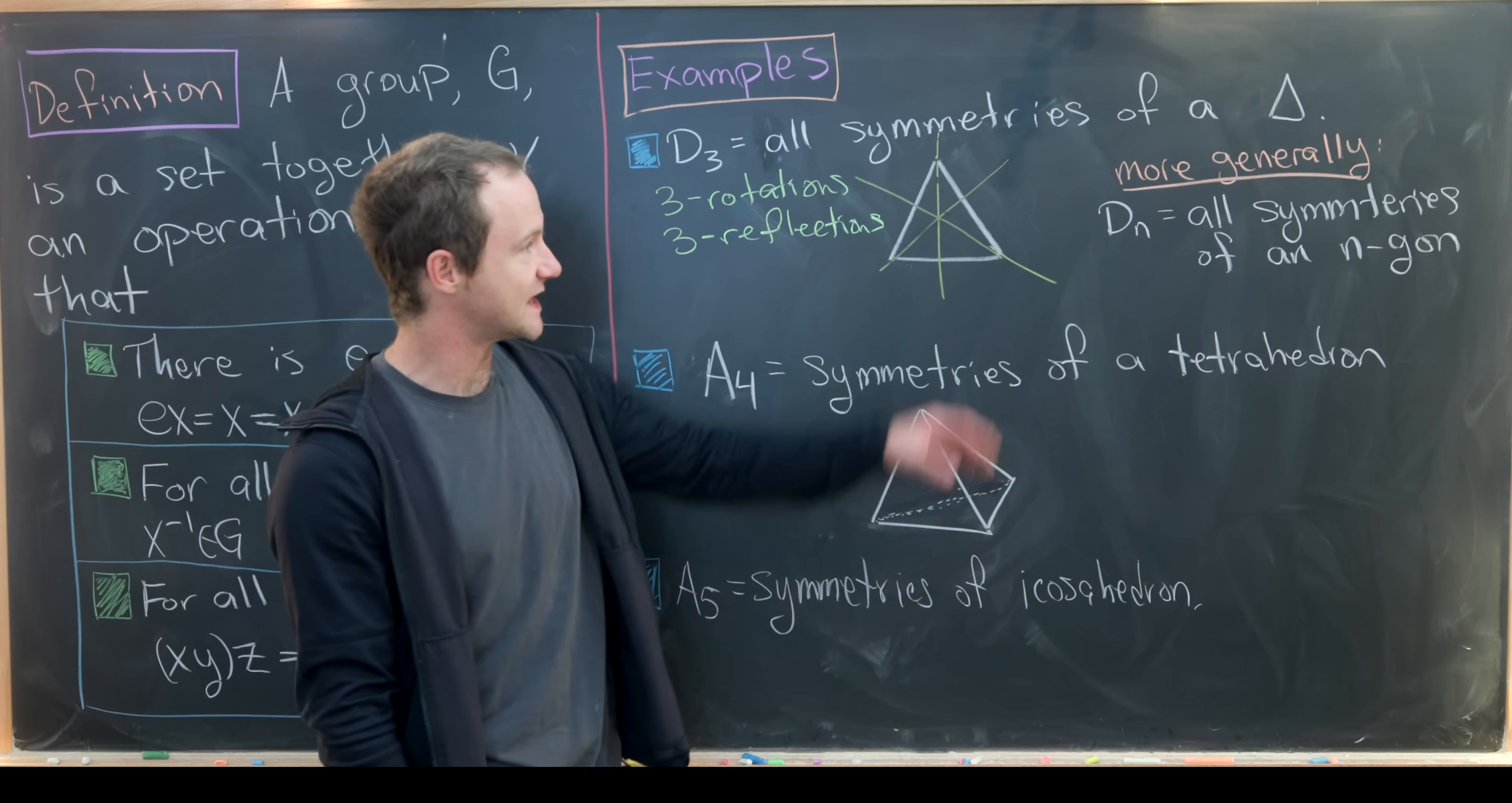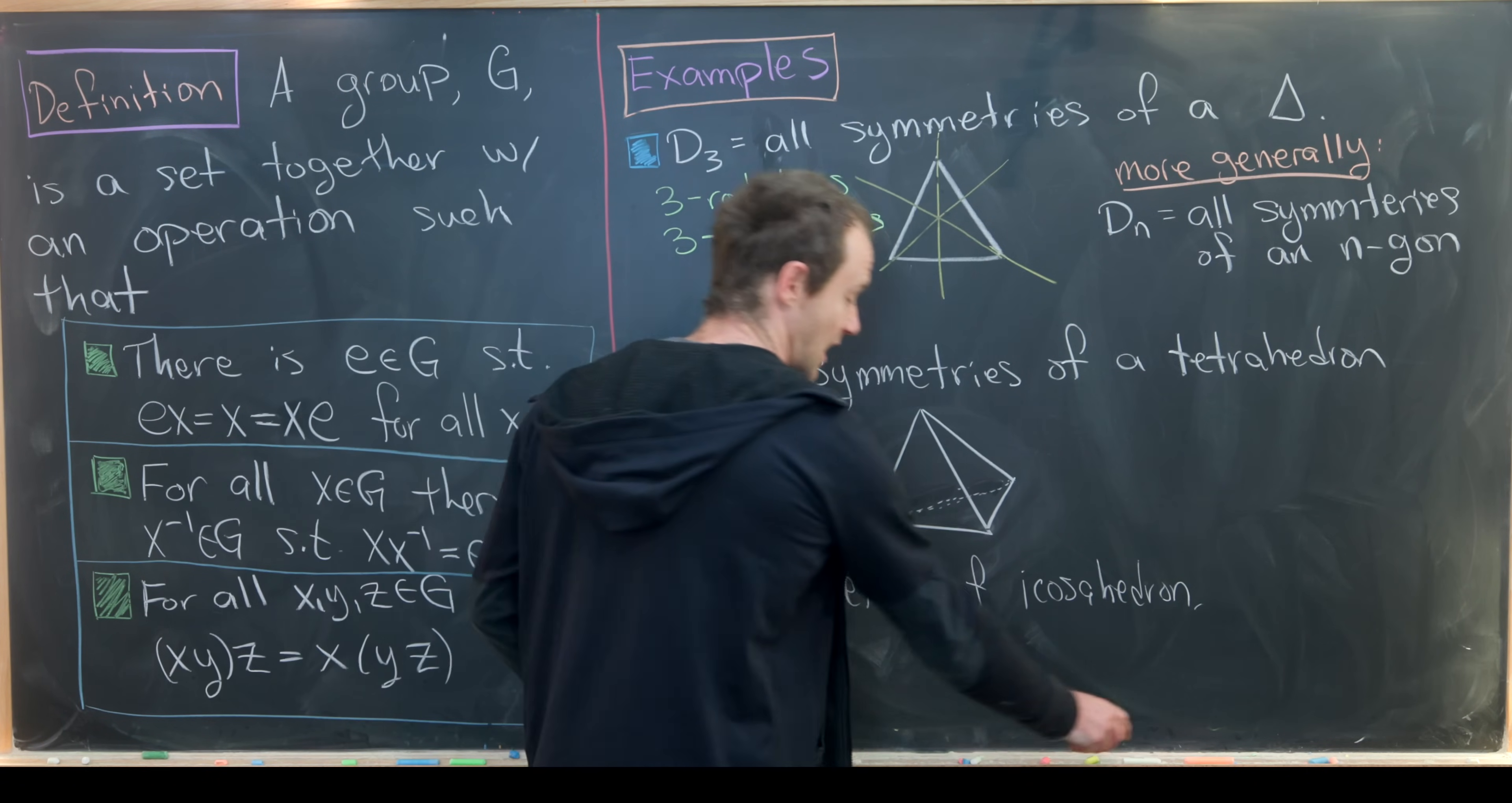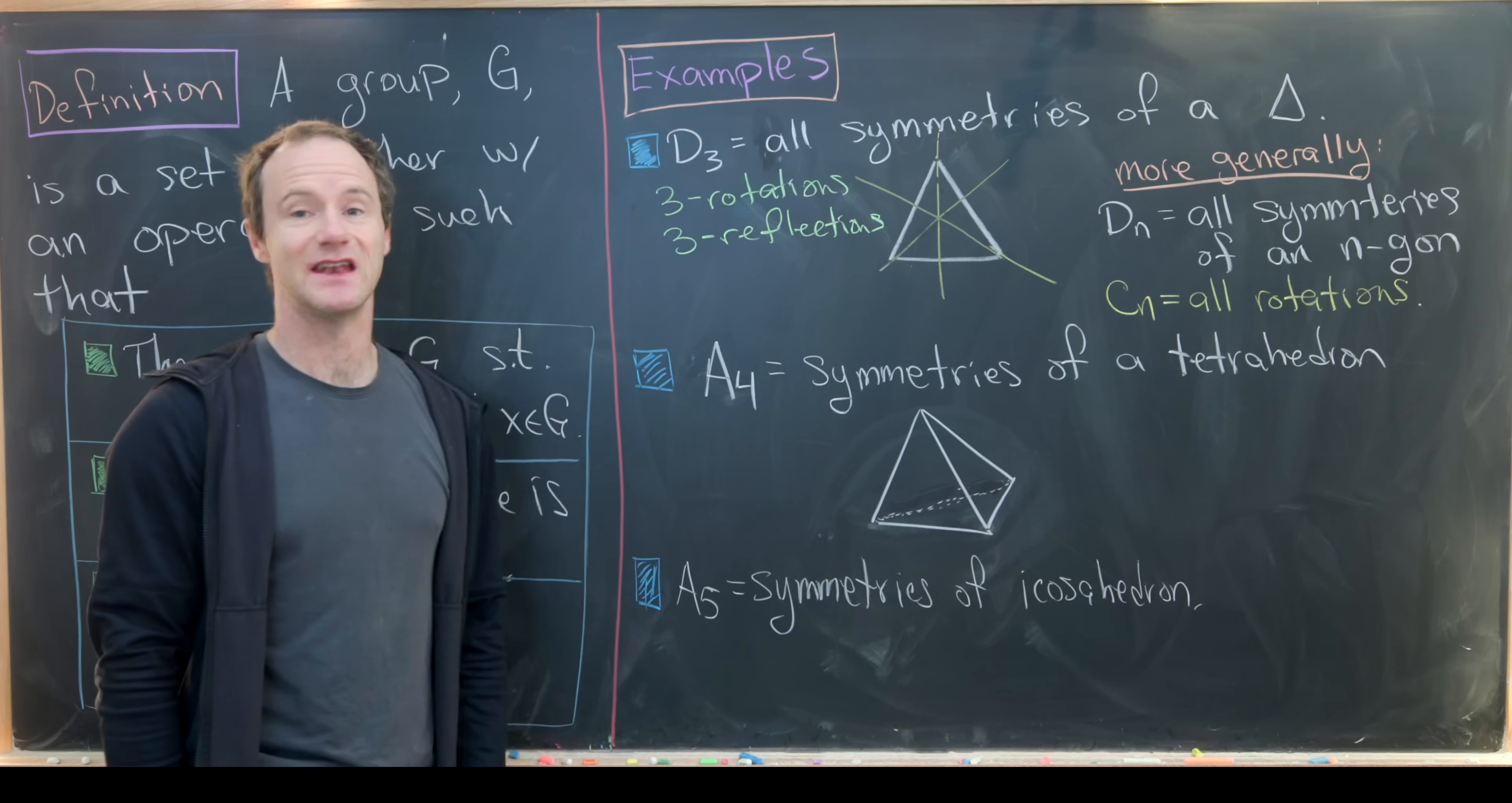Reflections are most definitely different than rotations. Now a generalization of this would be Dn, the dihedral group of order 2n, which has all symmetries of a regular n-gon. In this case, we have n rotations and n reflections. And there's an obvious substructure, which we might call Cn, which would be just all rotations, forgetting about the reflections. So this would have n rotations.